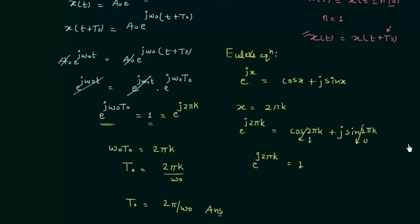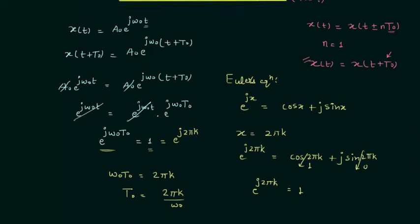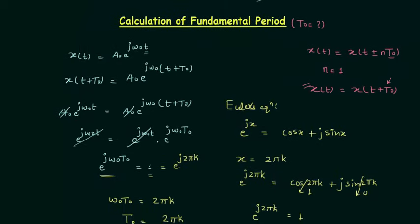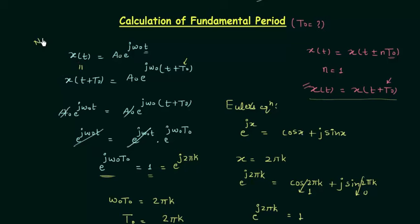So this is the answer of this problem, and you can see how we have calculated the fundamental time period t0 using the condition for periodicity with a few simplifications. The first thing you have to do is find out x(t + t0), then equate x(t) and x(t + t0). Performing a few simple mathematical operations you can easily calculate the fundamental time period t0. This type of signal is called a non-composite signal.